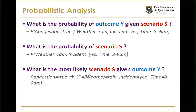Another question is: what are the most likely scenarios given a particular outcome? When we observe congestion, what are the most likely combinations of scenario variables that might have caused it? All these probabilistic queries are important to answer and require a systematic statistical method.